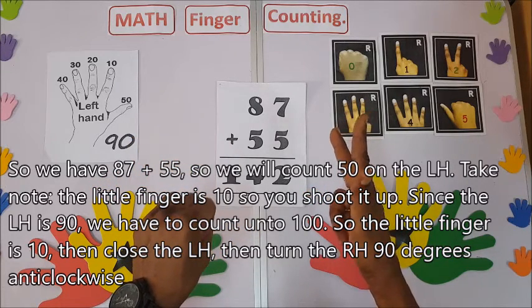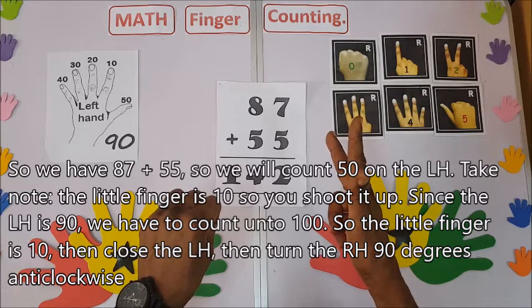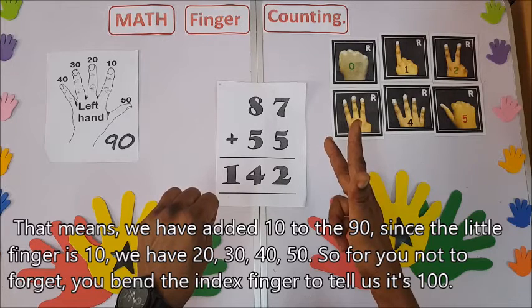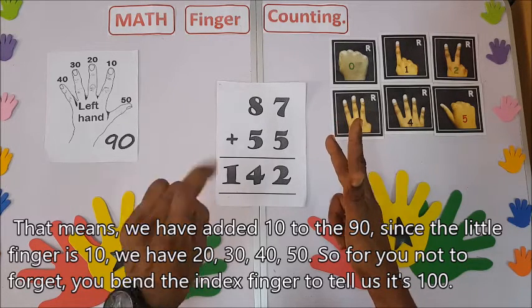And turn the right hand 90 degrees anticlockwise. That means we have added 10 to the 90. Since the little finger is 10, we have 20, 30.